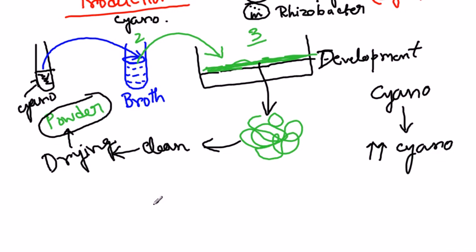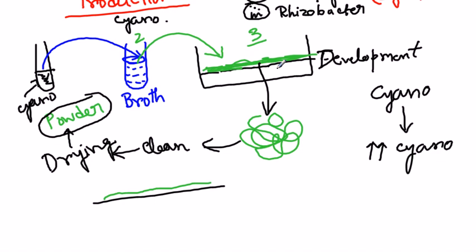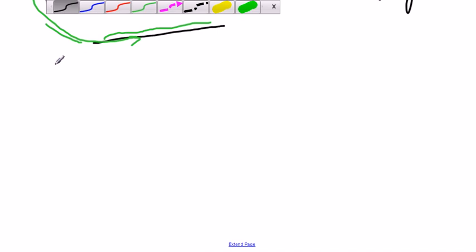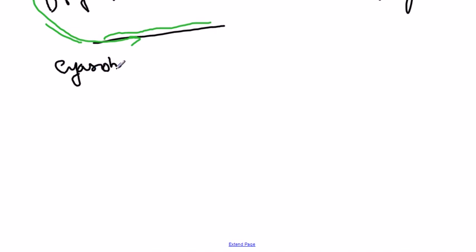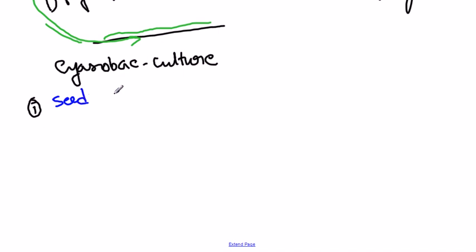We need to add this powder inside the soil. To achieve this, we can follow two different important steps. The first strategy is called the seed pelleting strategy. Once the cyanobacterial culture is produced in mass amounts, we can coat seeds with it.